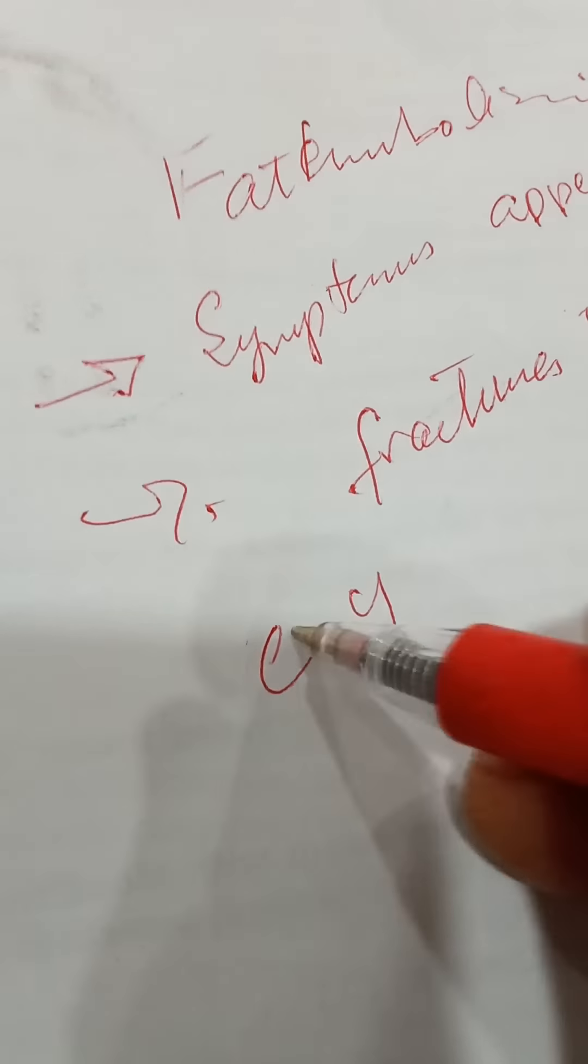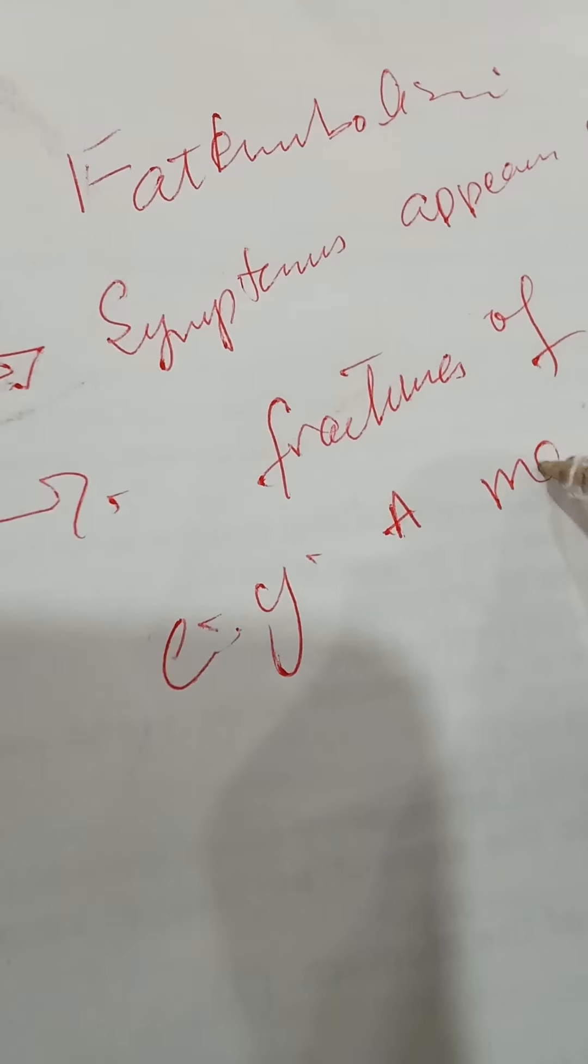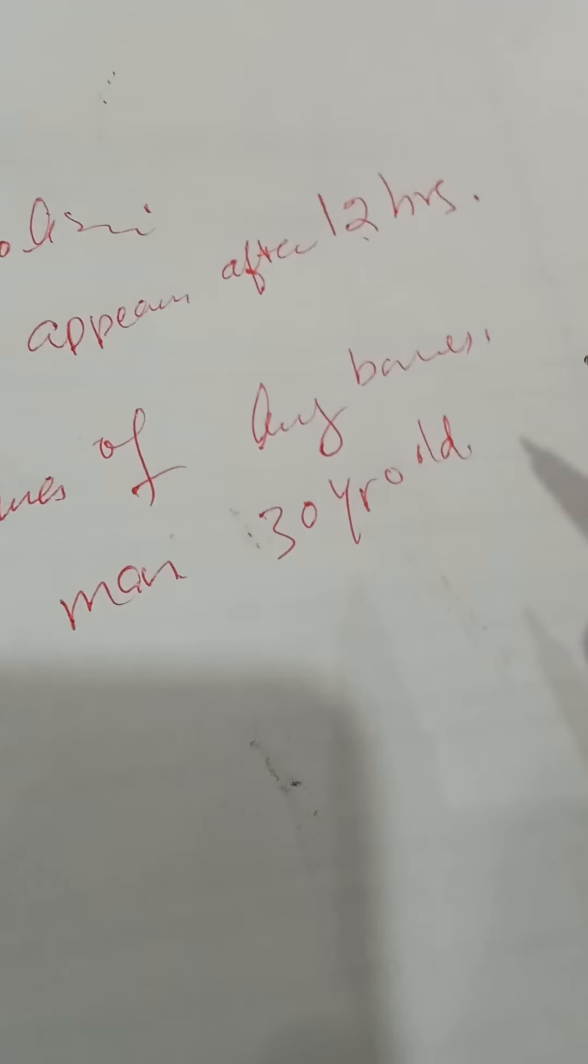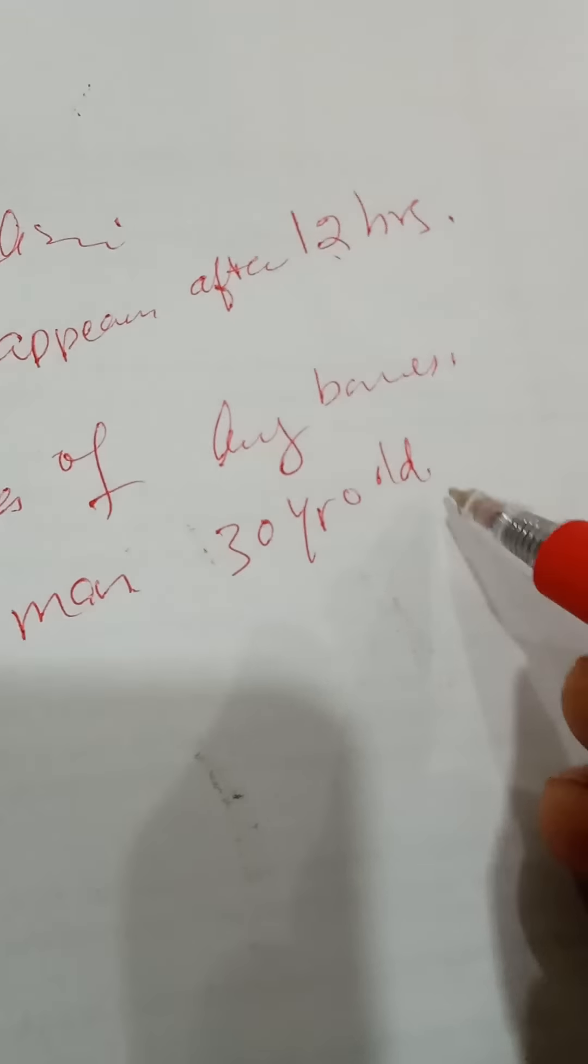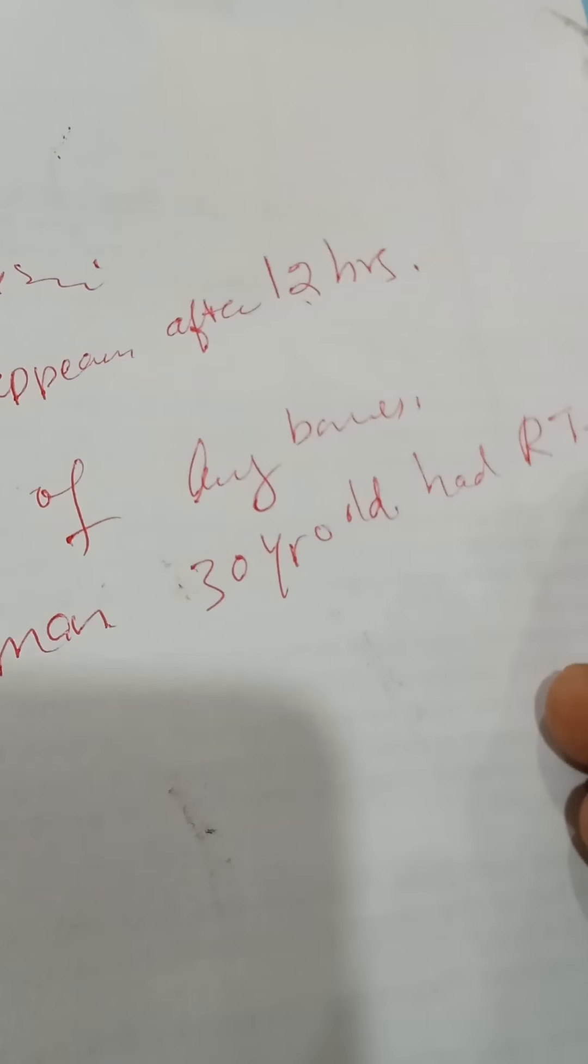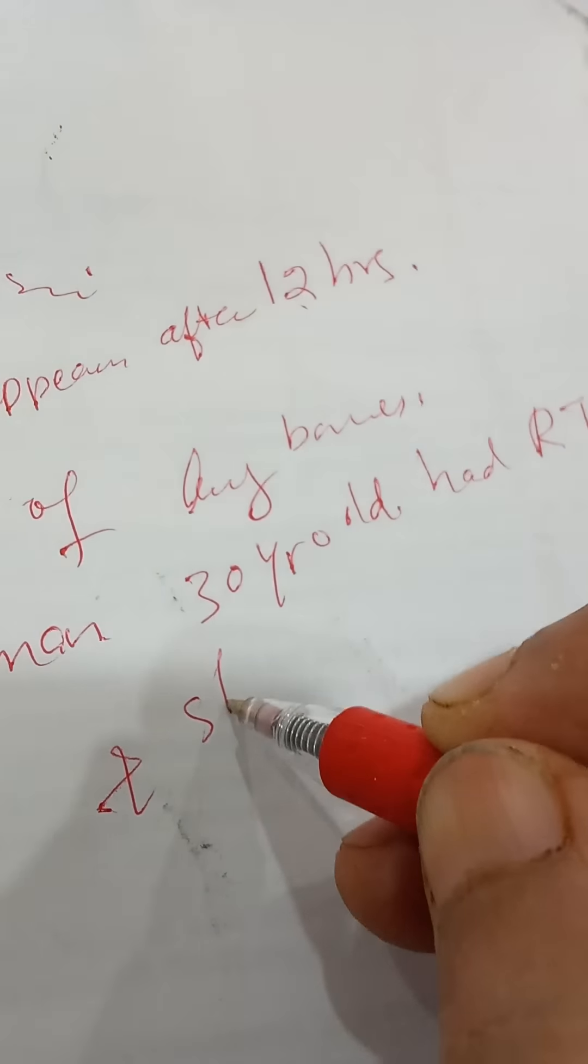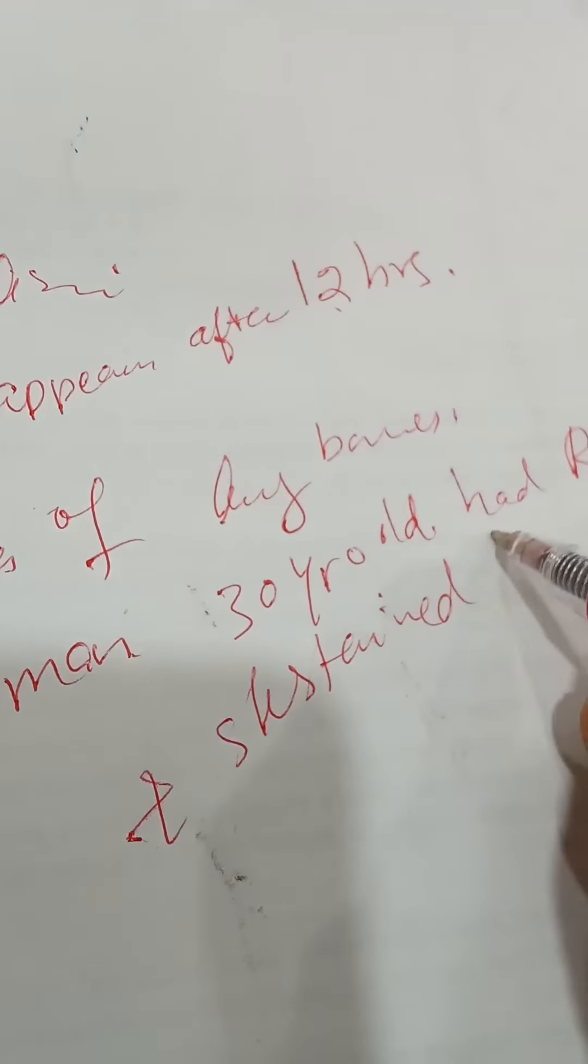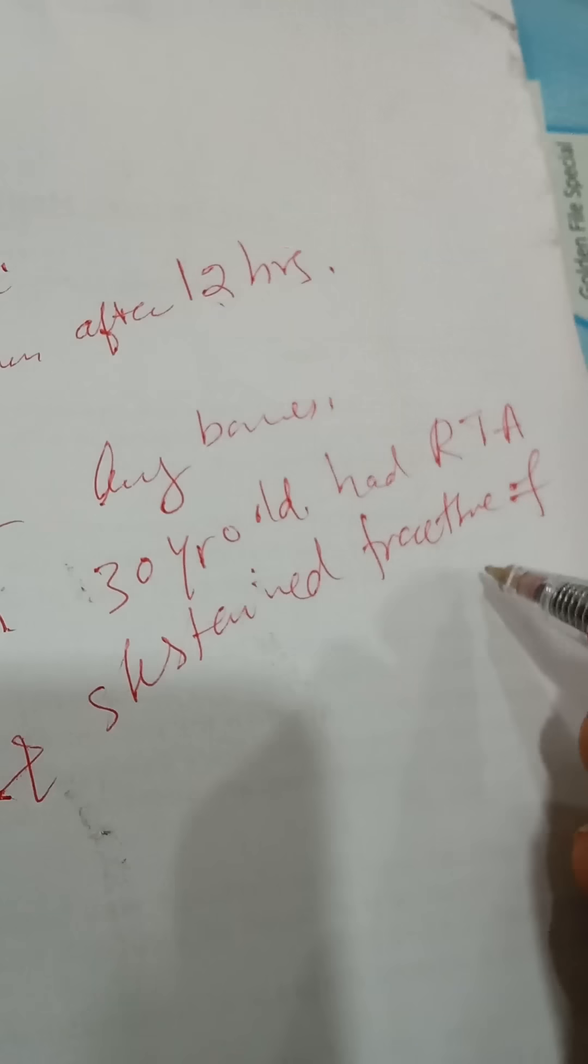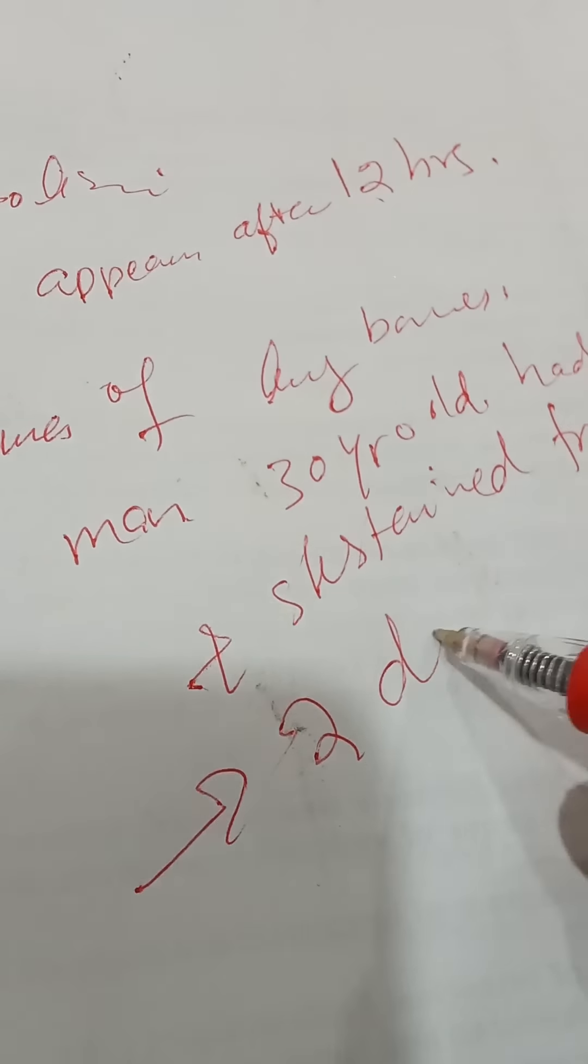For example, a man, 30 year old, had road traffic accident RTA and sustained fracture of femur. Two days later,